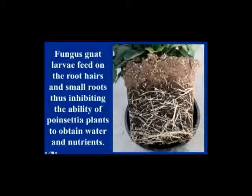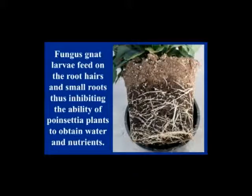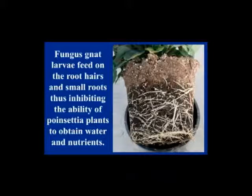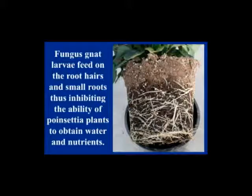One way to avoid problems with fungus gnats is to allow the top one to two inches of growing medium to dry down. If adult females lay eggs, egg survival will be very low — you'll get high mortality — resulting in fewer fungus gnat larvae feeding on the roots. Allowing that top one to two inches to dry down creates a very inhospitable environment for eggs to hatch, giving very high egg mortality.